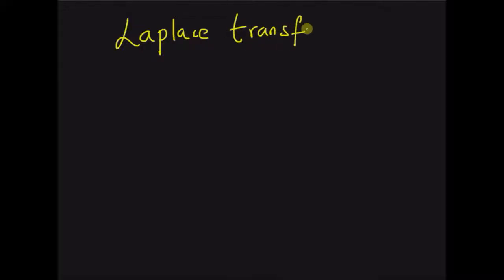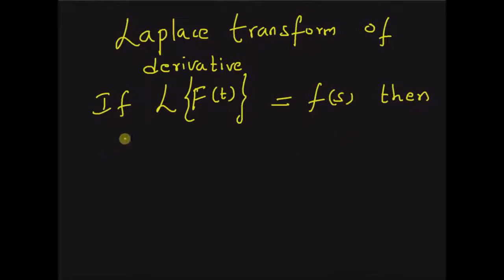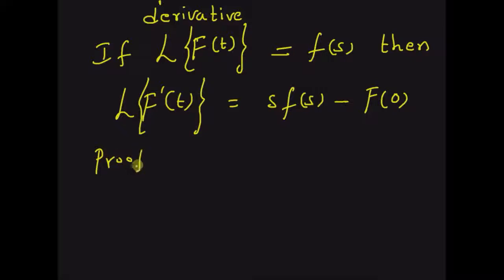Hello, welcome. In this short video, let us look at the property of Laplace transform concerning the derivatives. It is the Laplace transform of a derivative — that is, if the Laplace transform of a function f(t) is given by F(s), then the Laplace transform of the derivative f'(t) is equal to s·F(s) minus the initial value of the function, f(0). Let us look at the proof for this theorem.